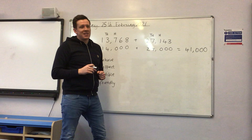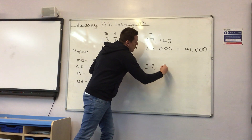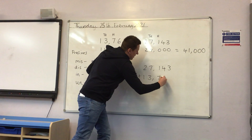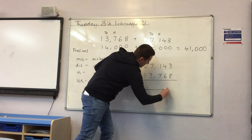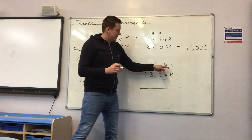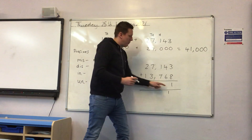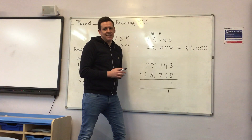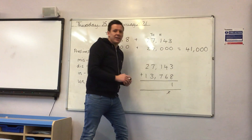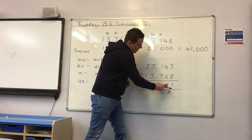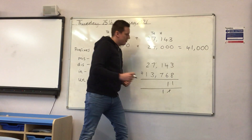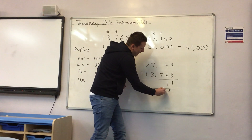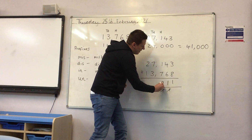And then I'm going to work it out by using my column method that we practised yesterday. So I'm reordering — that's putting the biggest number first — and my second number second. I'll add using the column method. Three add eight is 11, so I put my one and carry my one across to my tens. Then in my tens column, four tens add six tens is ten tens, add the one ten that I've carried, becomes eleven tens. So I put my one in my tens and carry the second one across to my hundreds. Then in my hundreds, one hundred add seven hundred is eight hundred, and if I add the one hundred that I've carried across, I get nine hundred.